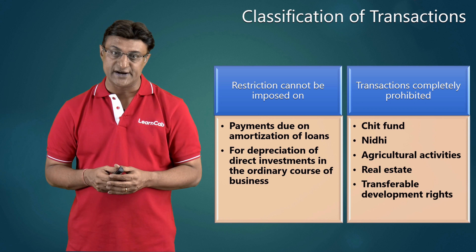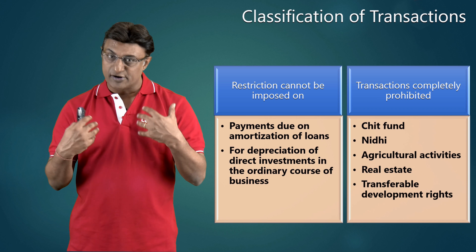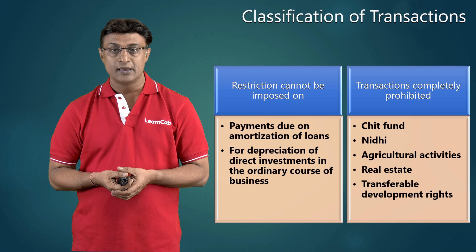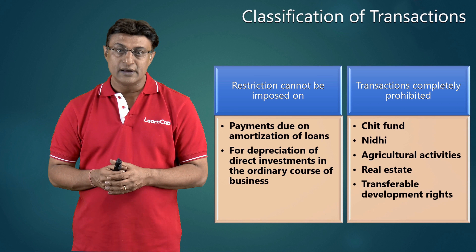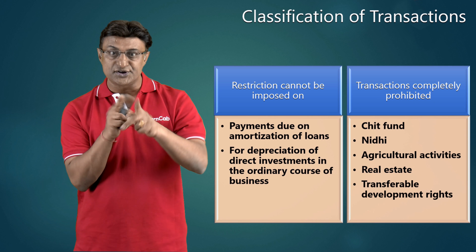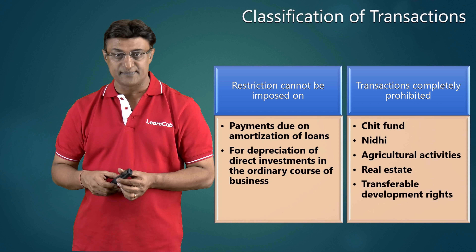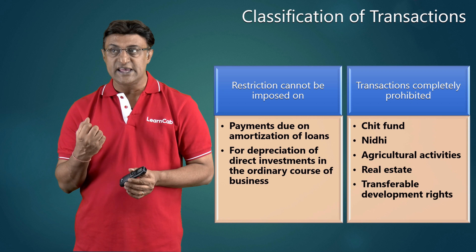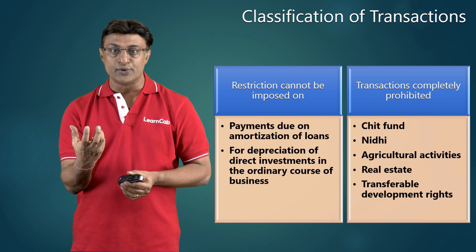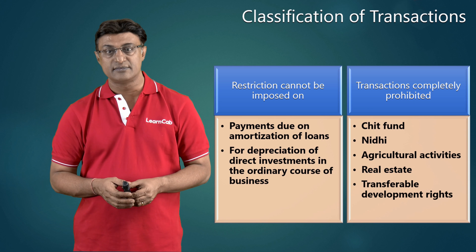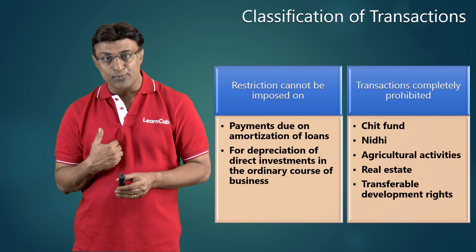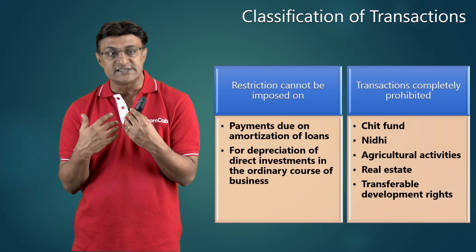Nidhi — there is a separate chapter in the Companies Act for Nidhi companies, also called mutual benefit companies. A person resident outside India is completely prohibited from participating in the capital or activities of a Nidhi company in India. Nidhi is essentially a corporate cooperative principle type of organization. Agricultural and plantation activities are also prohibited — we don't want foreign direct investment in agriculture in India, and we will not allow Indian residents to contribute to agricultural activities outside India.